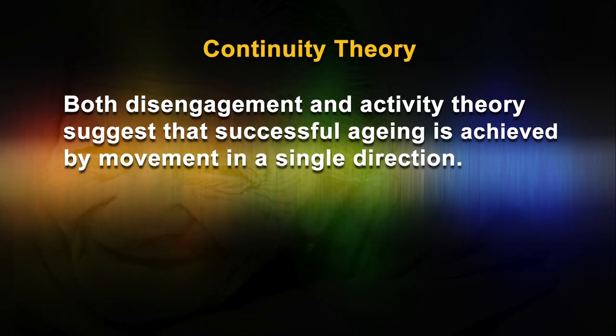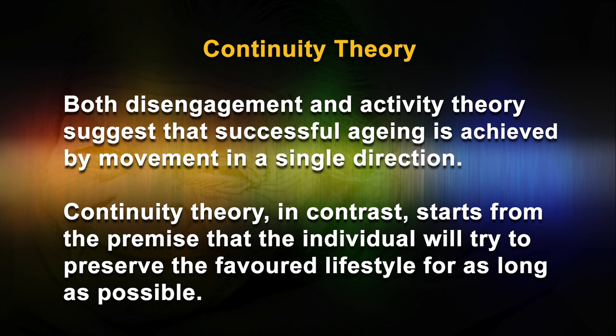Continuity Theory holds that in the course of growing older, the individual will attempt to maintain stability in the lifestyle he or she has developed over the years. Continuity theory suggests that in the process of aging, the person will strive to preserve the habits, preferences, and lifestyle acquired over a lifetime, and that there will be a process of evolution of activities as the individual grows older. Both disengagement and activity theory suggest that successful aging is achieved by movement in a single direction.